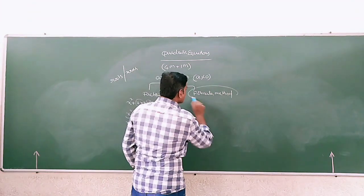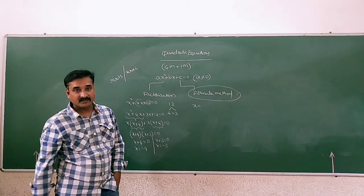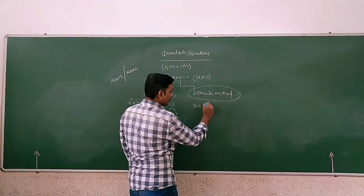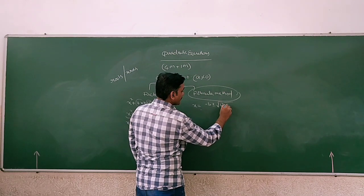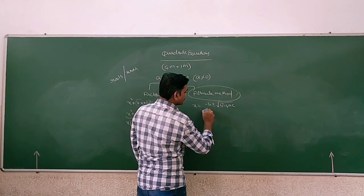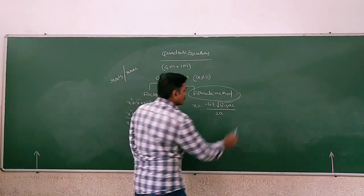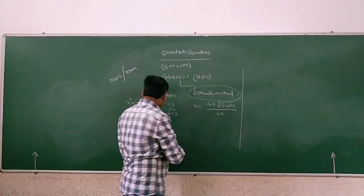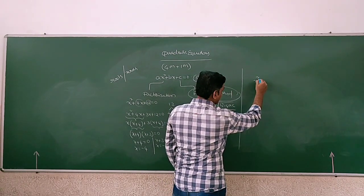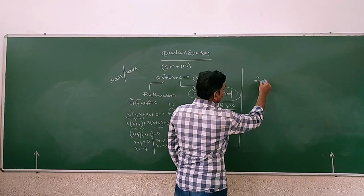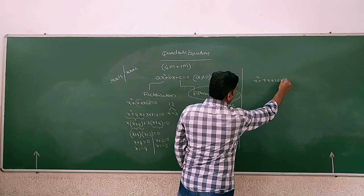What is the formula method? To solve this quadratic equation we have the formula: x equals to minus b plus or minus root of (b² minus 4ac), all divided by 2a. We can take the same expression: x² plus 7x plus 12 equals to 0.